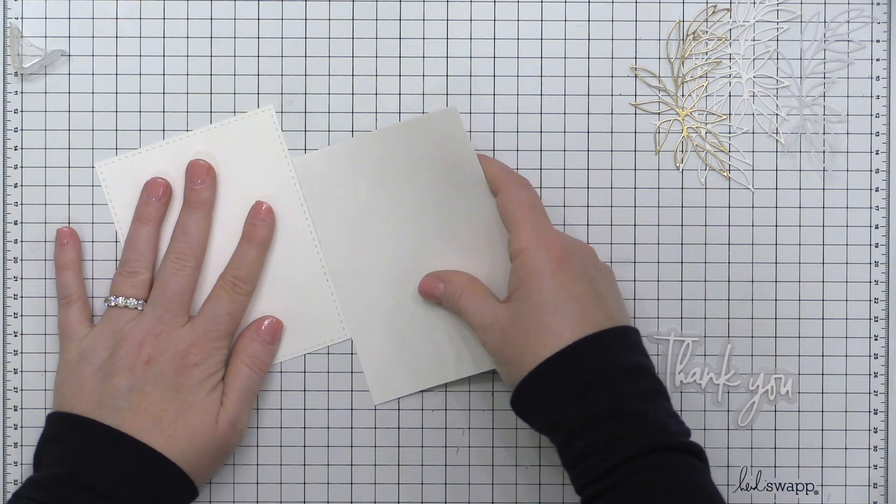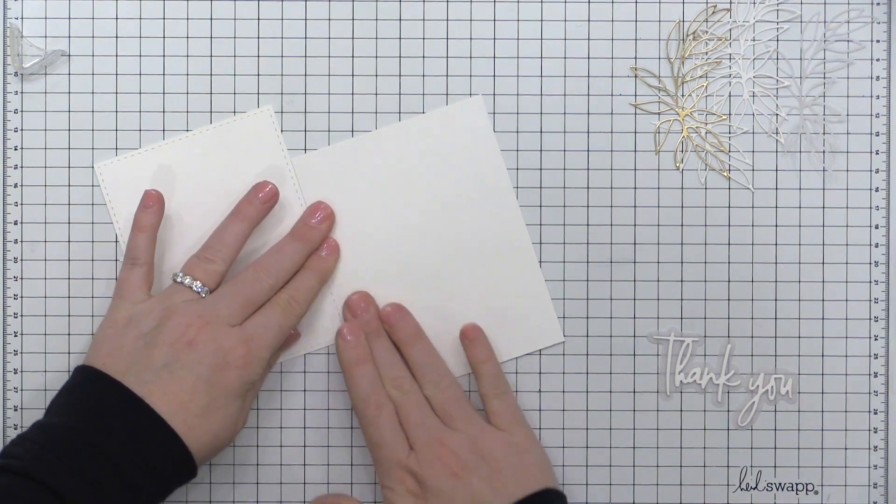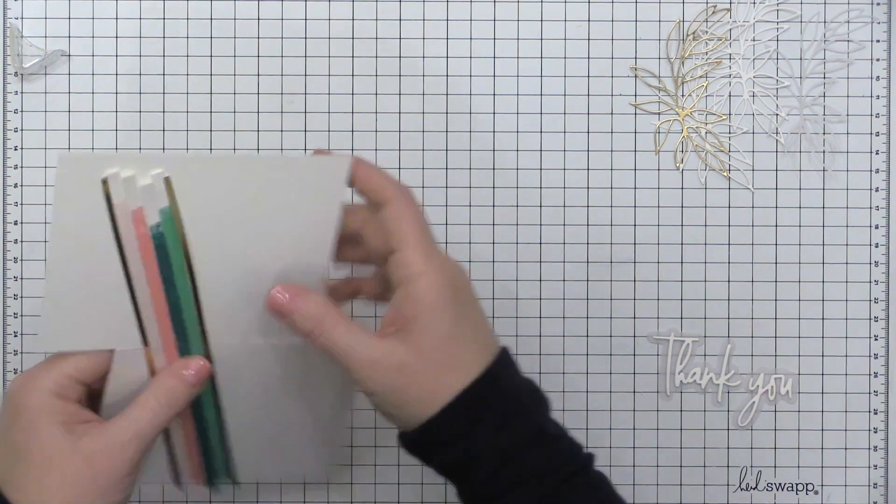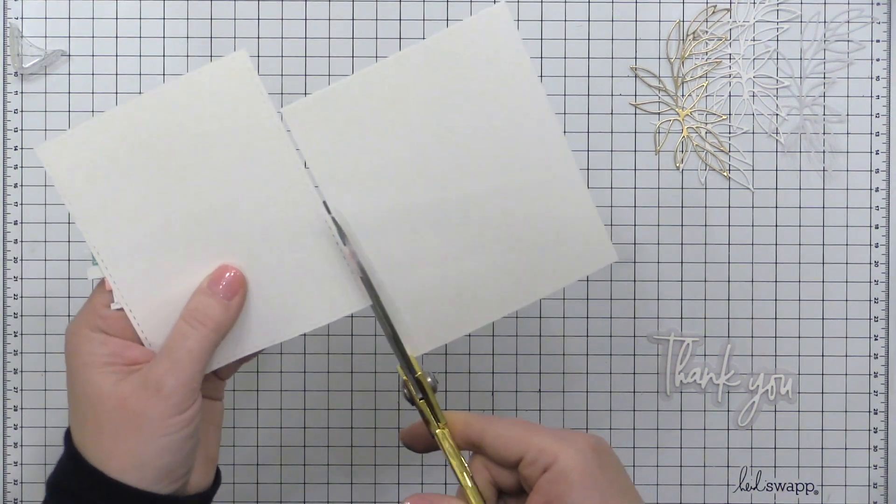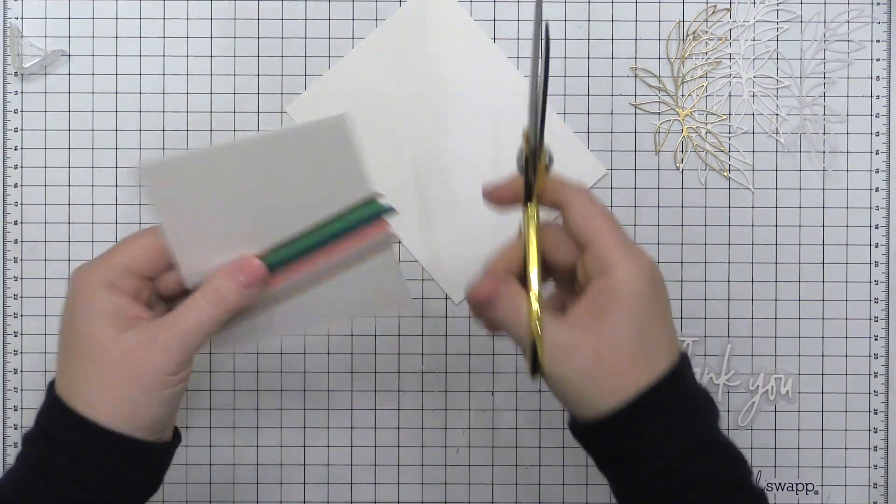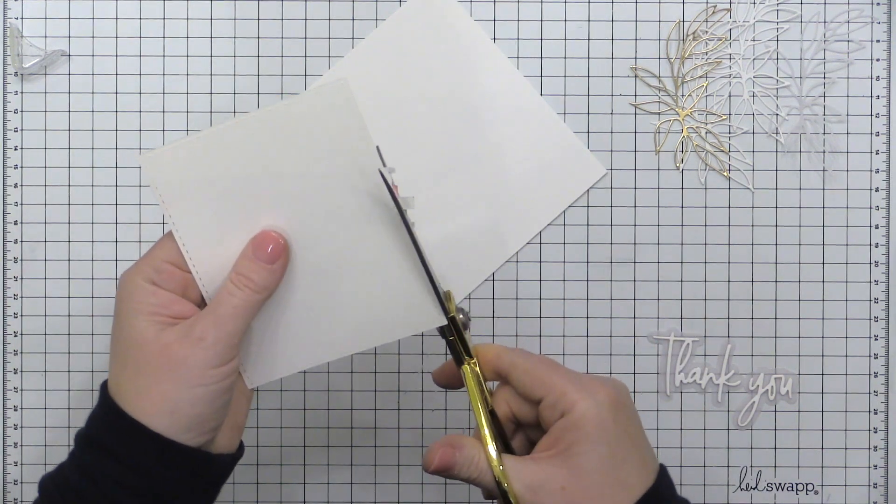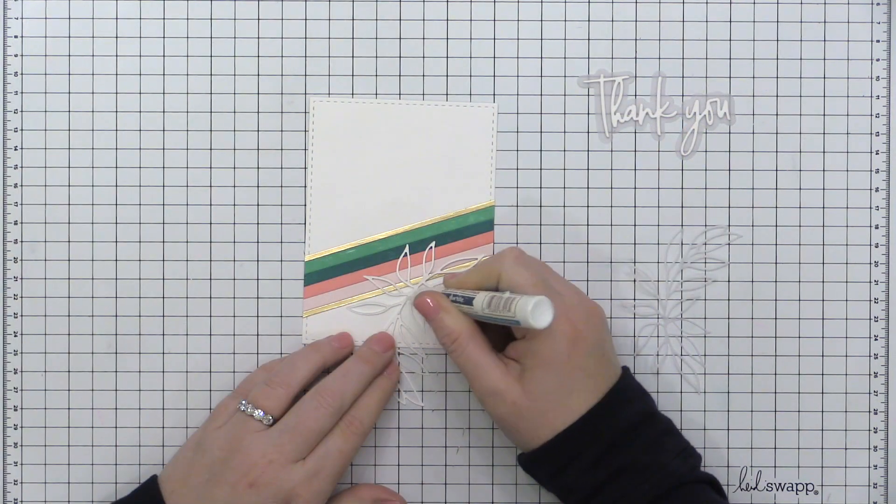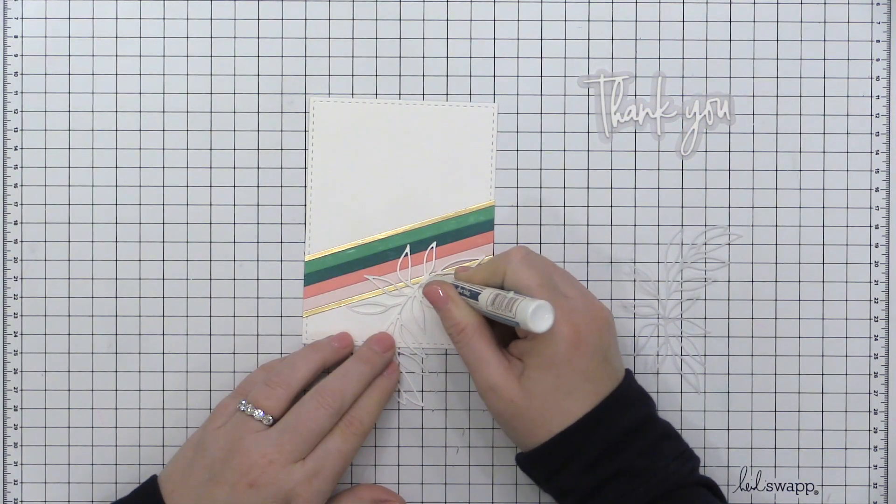Now you'll notice that I went ahead and placed all of my stripes onto my card panel and I'm placing a scrap piece of cardstock next to that and I'm going to cut between the two pieces of cardstock and that's going to allow me to have those ends that are hanging off already adhered down onto a panel of cardstock and then I can trim them up later to use them on a different card project.